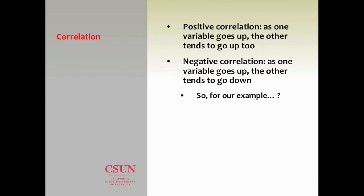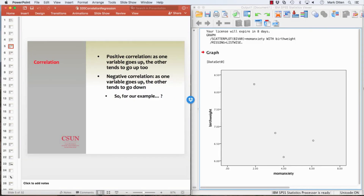A positive correlation means as one variable goes up, the other tends to go up too. A negative correlation means as one goes up, the other goes down. For our example, if you were to imagine the regression line, you've got that one dot in the upper left of the scatter plot that will probably pull the line up — so the line is likely going upper left to lower right, suggesting our correlation is going to be negative.